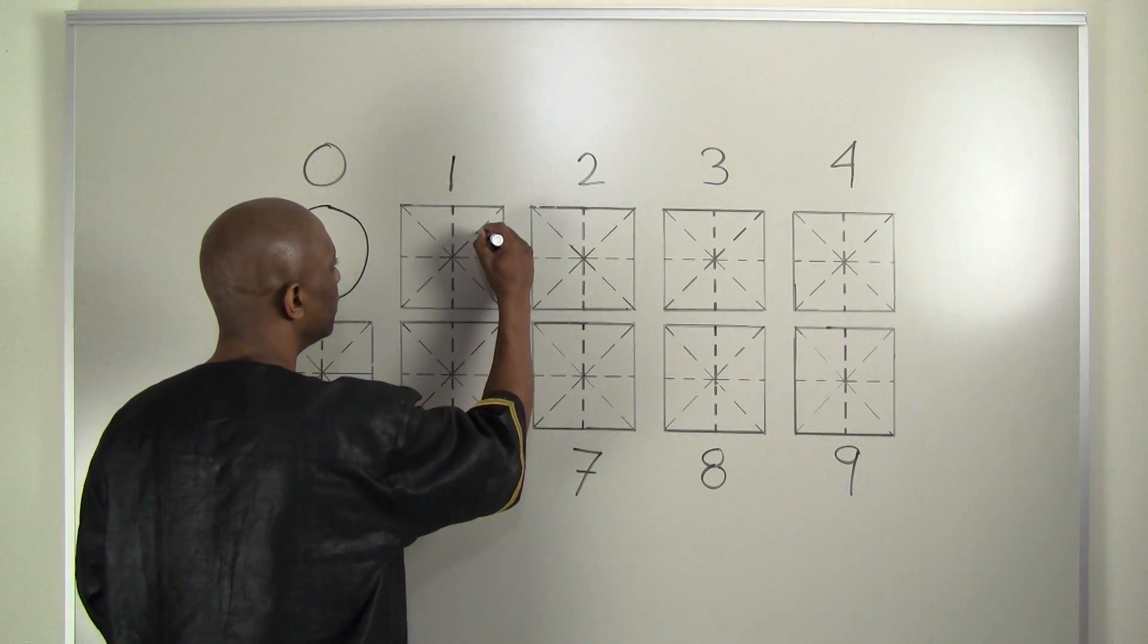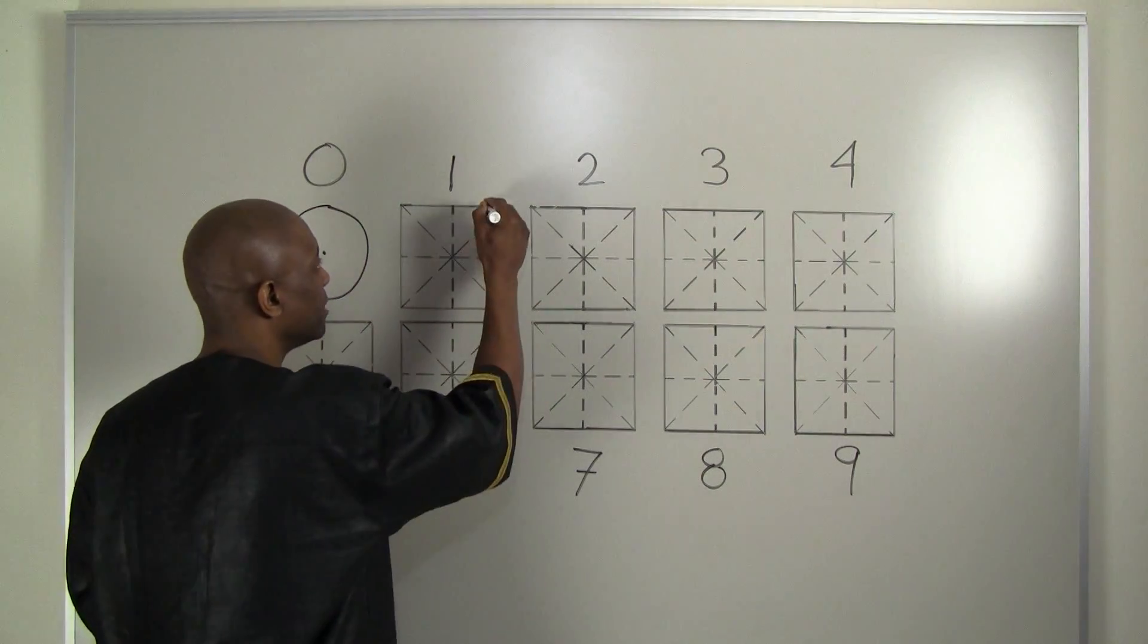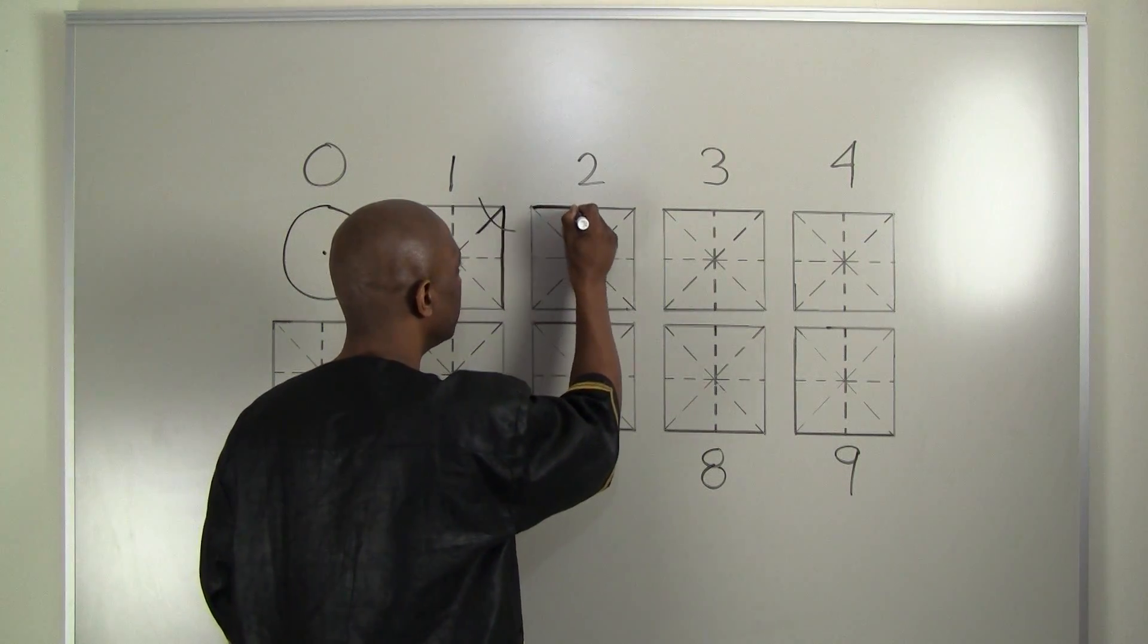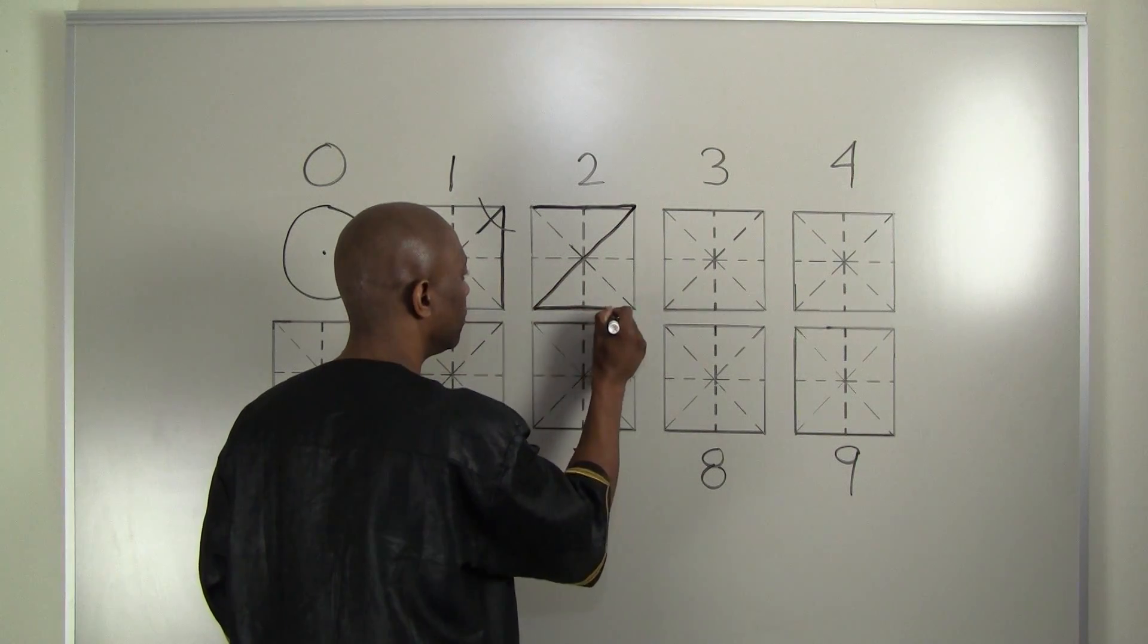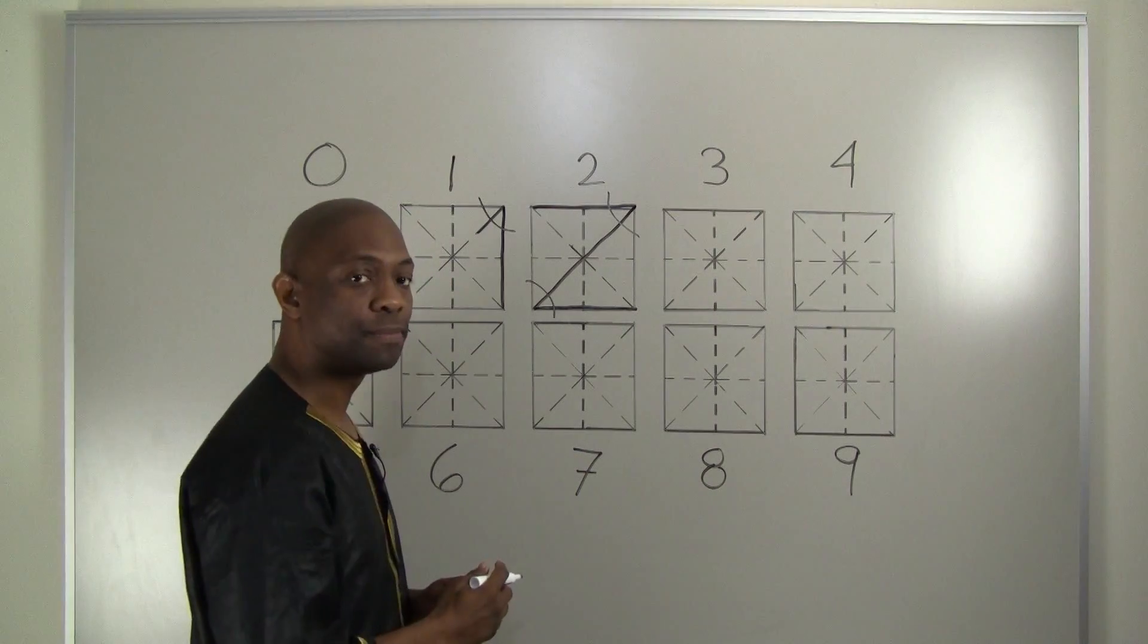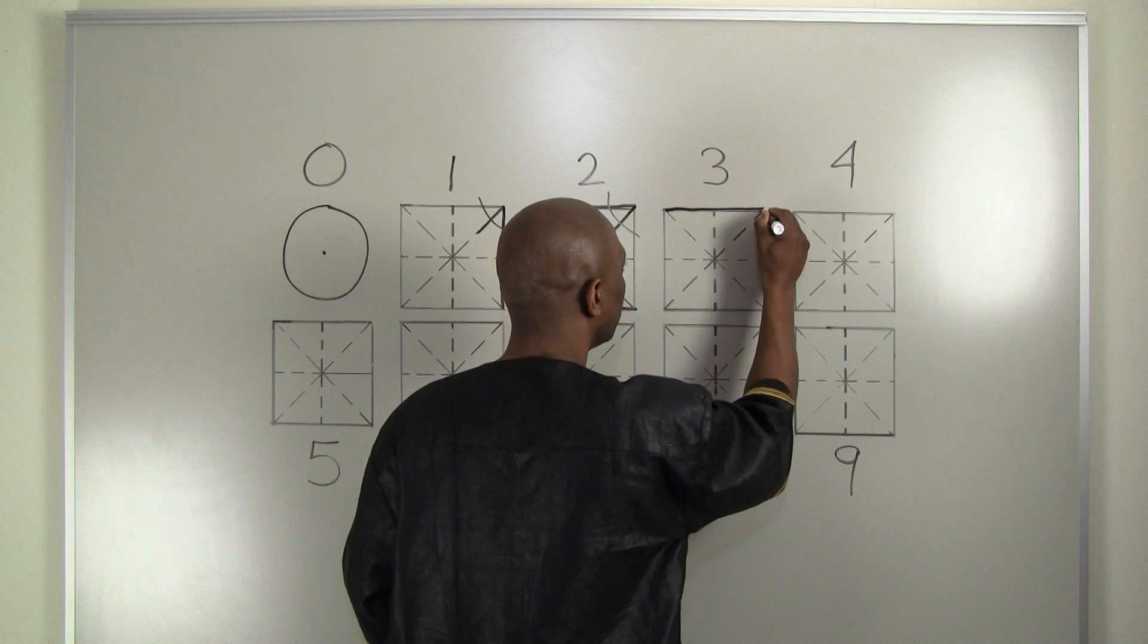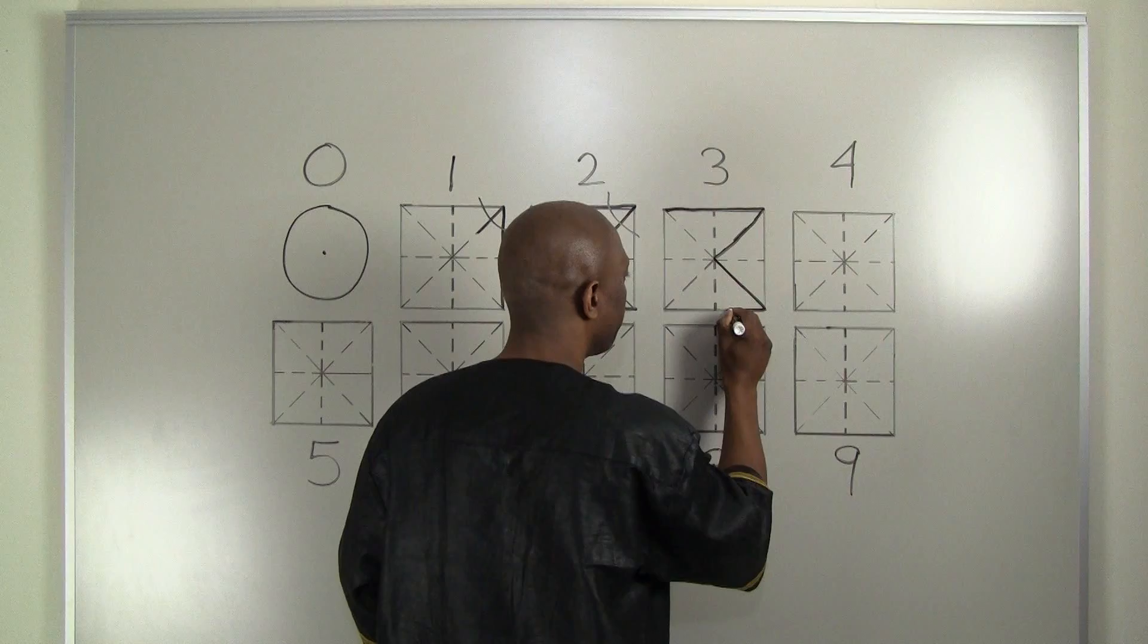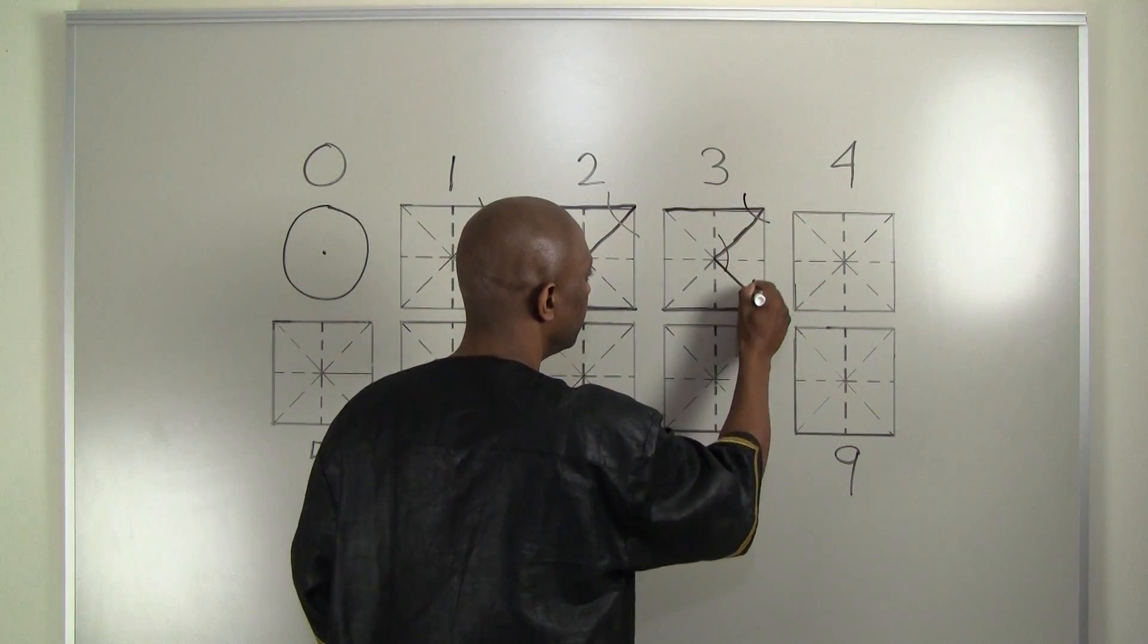We get 1 because it has one angle. 2 because it has two angles. 3 because it has one, two, three angles.